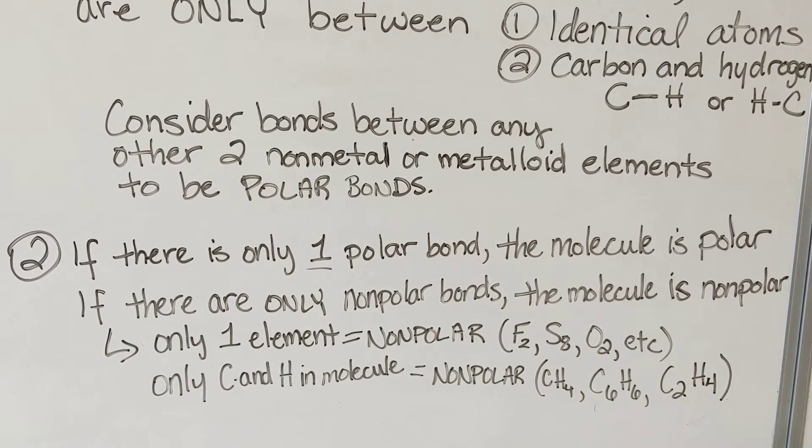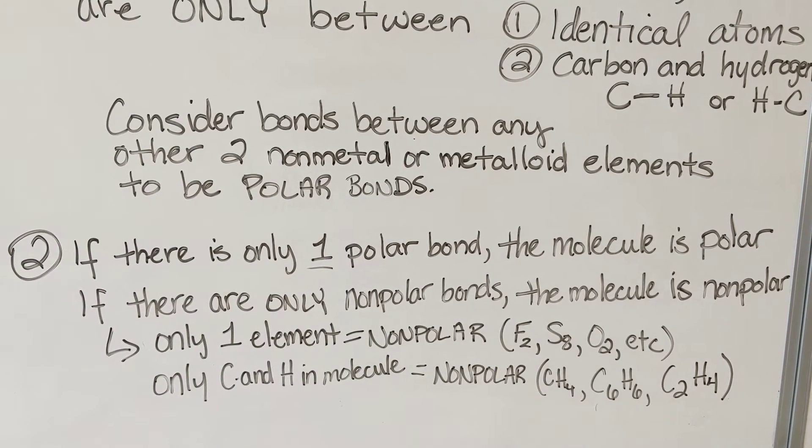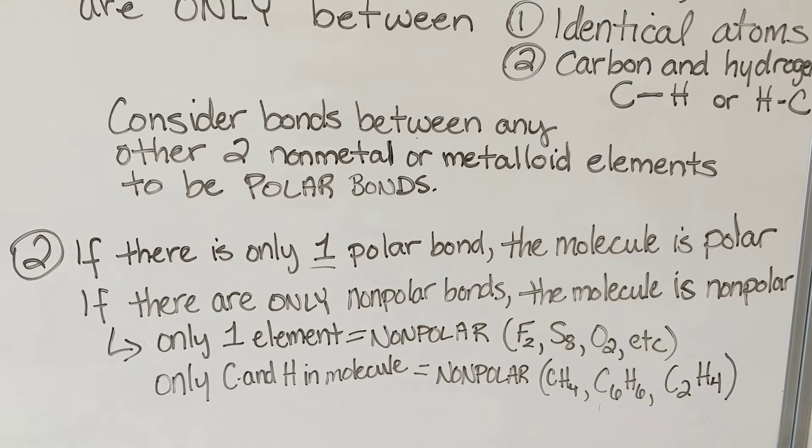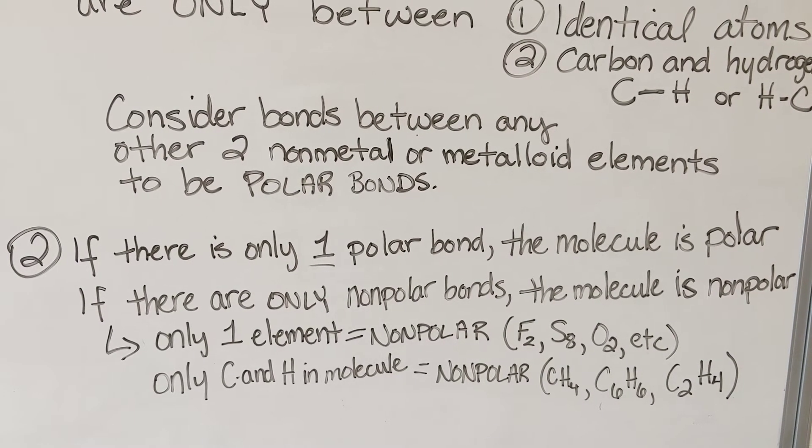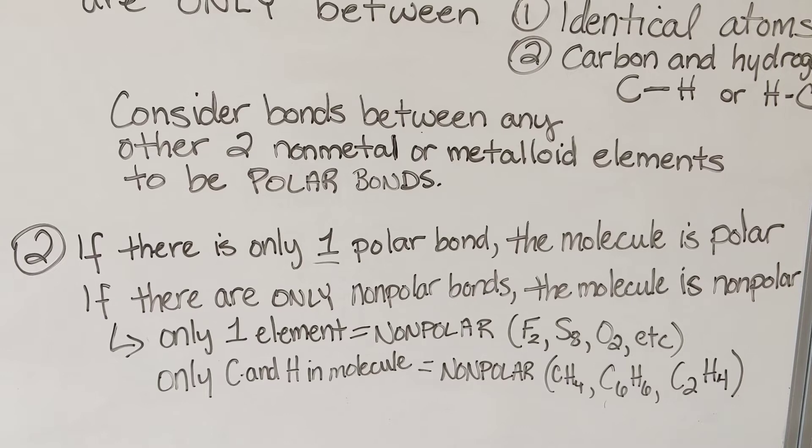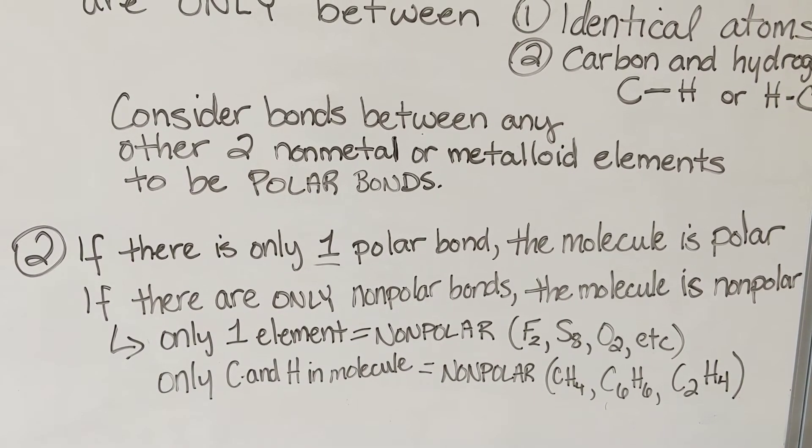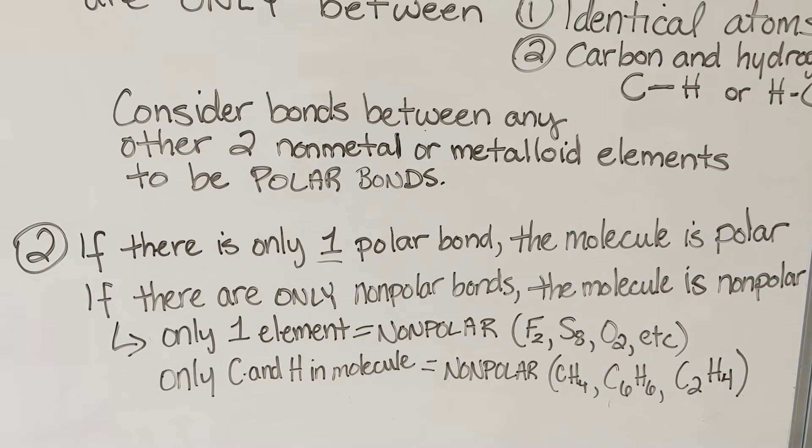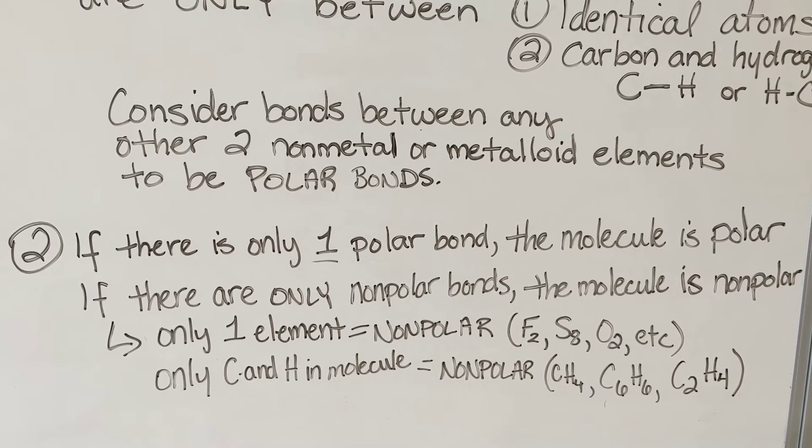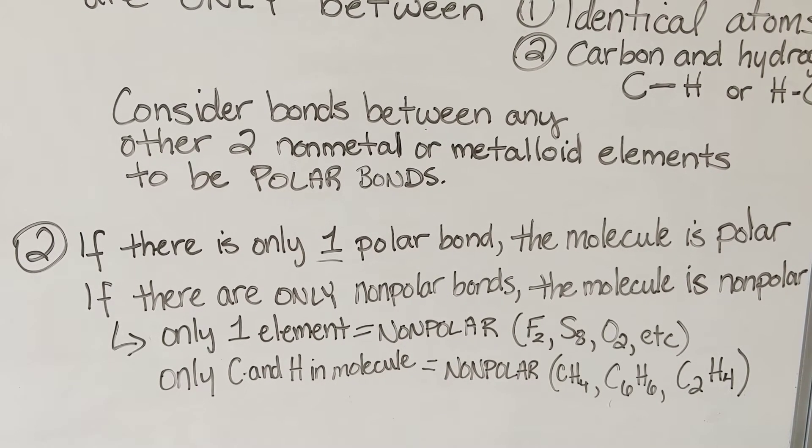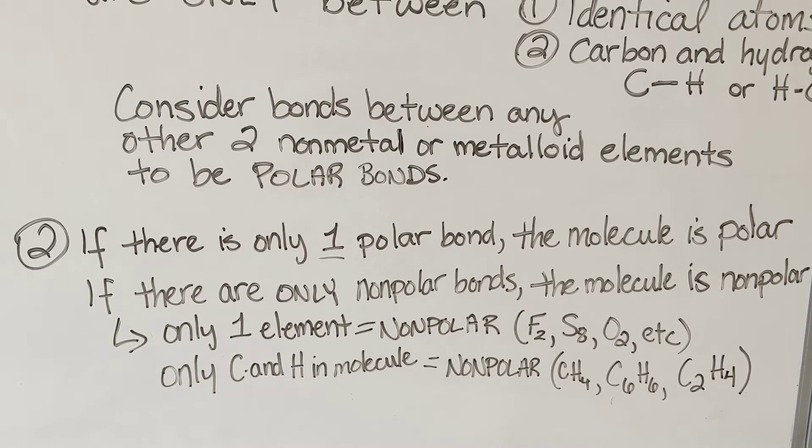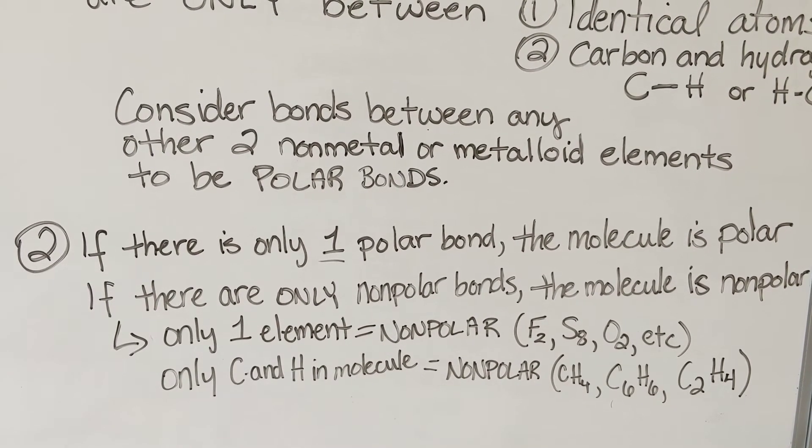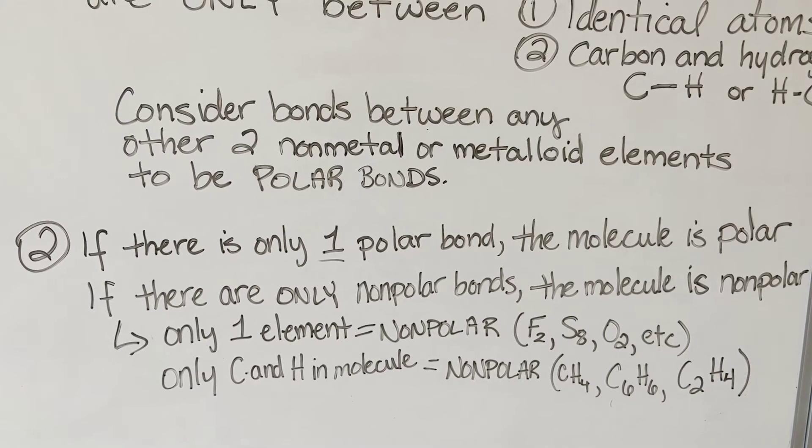If you have two fluorine atoms or eight sulfur atoms or two oxygen atoms bonded together, because they're between atoms of the same element, the electrons will be shared equally in the bond and the bonds will be nonpolar. You also have bonds between carbon and hydrogen as nonpolar. So if there are only carbons and hydrogen atoms in the molecule, the molecule is nonpolar. Examples of that would be CH4, C6H6, or C2H4.